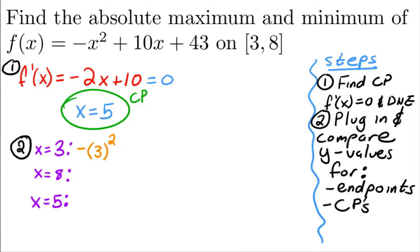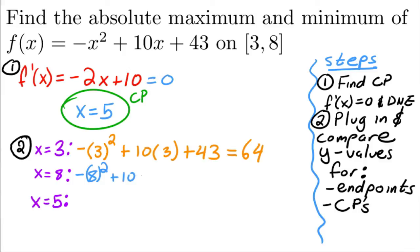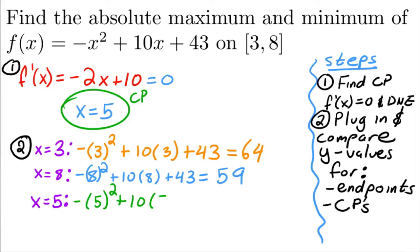The biggest y-value will be the absolute maximum and the smallest will be the absolute minimum. Plugging in x = 3: -3² + 10(3) + 43 = 64. Plugging in x = 8: -8² + 10(8) + 43 = 59. Plugging in x = 5: -(5²) + 10(5) + 43 — be careful with that negative, don't put it inside the parentheses — which gives 68.